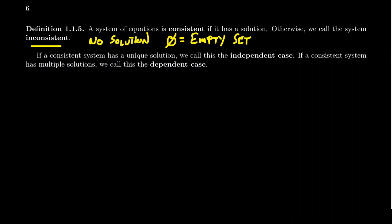If a linear system is consistent and has only one solution, we refer to that as the independent case. If a consistent linear system has multiple solutions, we call that the dependent case. The terminology isn't being precisely defined here yet — I'm piggybacking on vocabulary from previous algebra classes. In elementary or college algebra, you likely solved systems using substitution, elimination, or graphing. The unique solution was the independent case; multiple solutions was the dependent case.